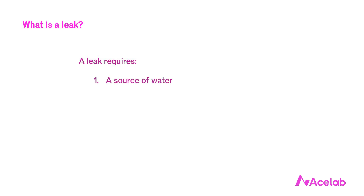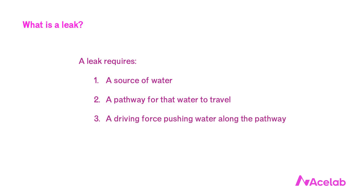With that in mind, let's talk specifically about leaks. For a leak to occur, all four of the following things need to happen: we need a source of water, a pathway for that water to travel from where it is to where we don't want it, a driving force to push water along that pathway, and finally something to be damaged or for someone to be annoyed. The reason thinking about leaks this way is so helpful is because it reveals opportunities we often overlook. When talking about avoiding leaks, we focus almost all of our attention on pathways — we obsess over sealing them. And that's not wrong, but it is incomplete, and it's often just ineffective.